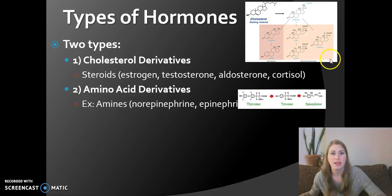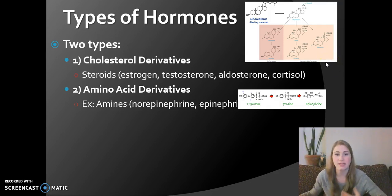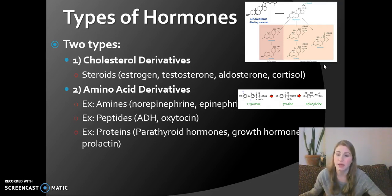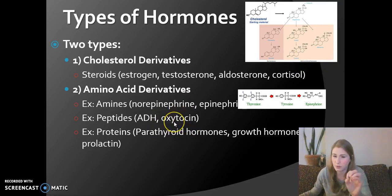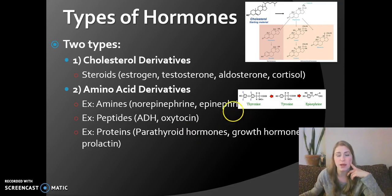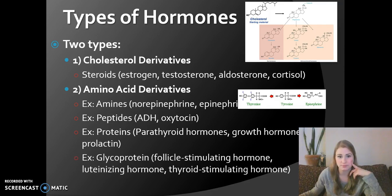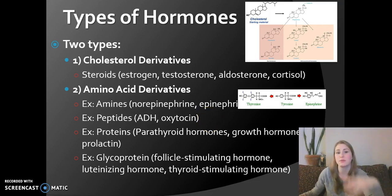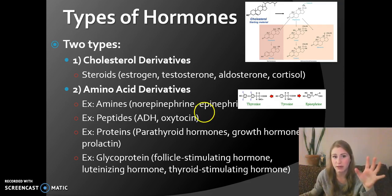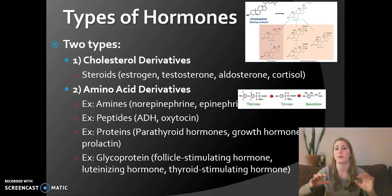The second type of hormone is amino acid derivatives. These can include amines, peptides, and proteins — anything along the lines of an amino acid. Polypeptides make up proteins, and when folded properly they become a protein. Examples include epinephrine, norepinephrine, aldosterone, oxytocin, parathyroid hormones, and growth hormones — all amino acid derivatives. Glycoproteins are also amino acid derivatives, and that's where FSH, luteinizing hormone, and thyroid stimulating hormone come from. So all hormones we've seen are either cholesterol derivatives or amino acid derivatives.